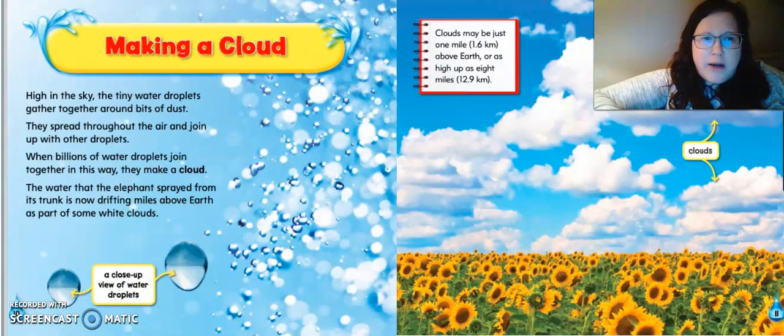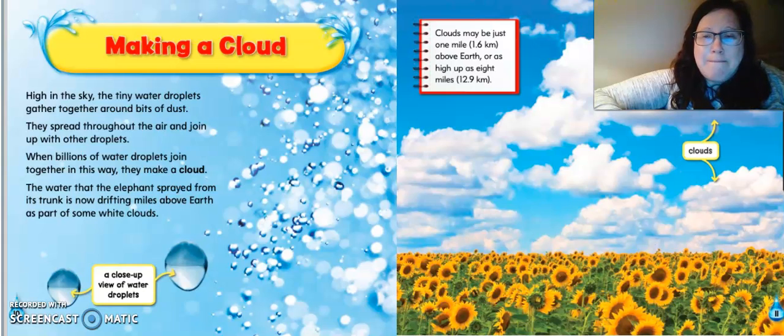High in the sky, tiny water droplets gather together around bits of dust. They spread throughout the air and join up with other droplets. When billions of water droplets join together in this way, they make a cloud. The water that the elephant sprayed from its trunk is now drifting miles above the earth as part of some white cloud. So here is a close up view of a water droplet. And then here you have a cloud. So the clouds start to get bigger and bigger and bigger as they get more drops of water that are connecting to each other. What do you think it might happen when the cloud gets too heavy?